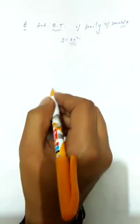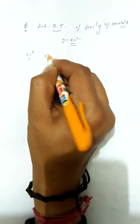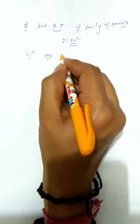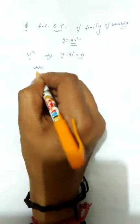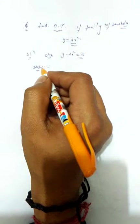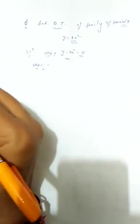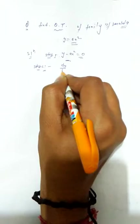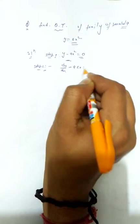Step 1: Put the function equal to zero, which gives y - ax² = 0. Step 2: Differentiate with respect to x. Differentiating this function, we get dy/dx - 2ax = 0, which becomes dy/dx = 2ax.